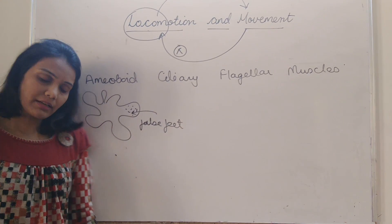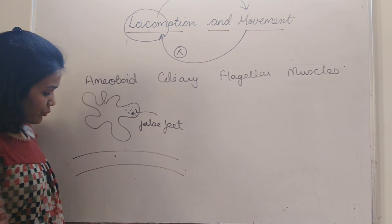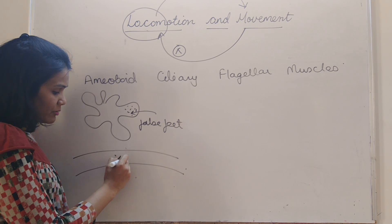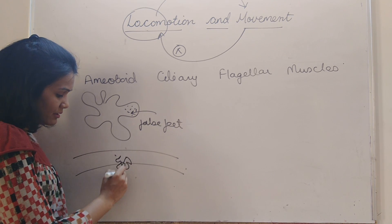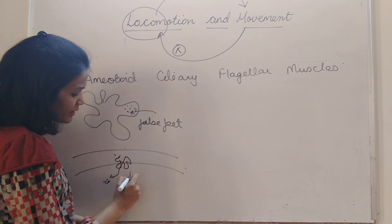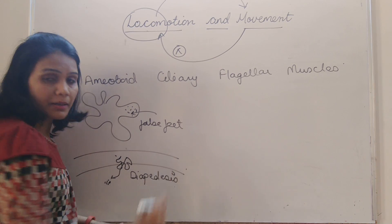This movement is also observed in us. This is a blood vessel. So when any foreign particle is attacking, the WBC will move out of the blood vessel to engulf it to phagocytose and that movement of WBC out of the blood vessel is called as diapedesis.